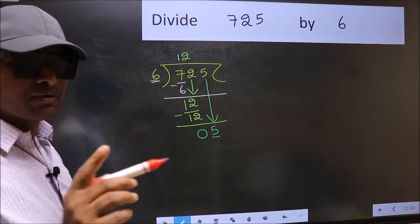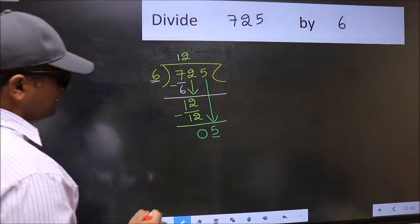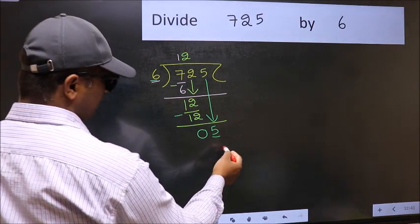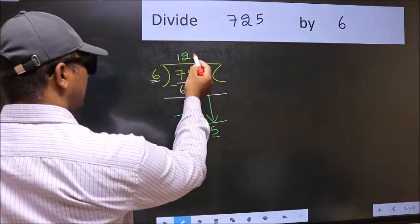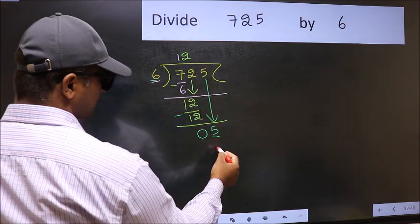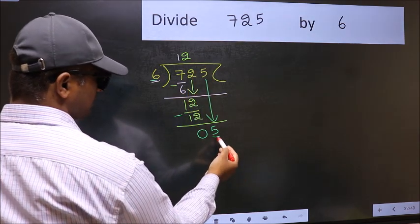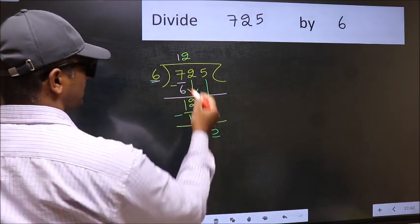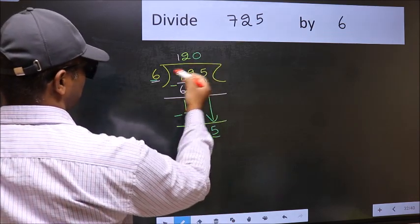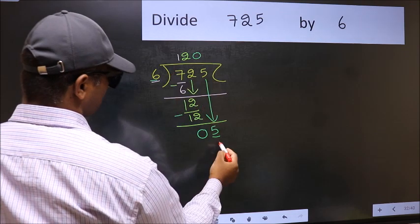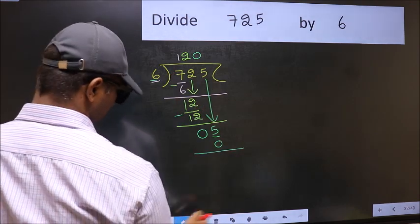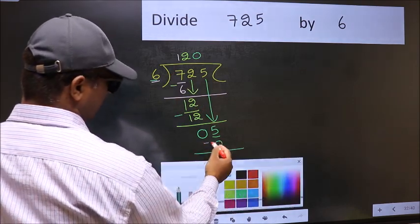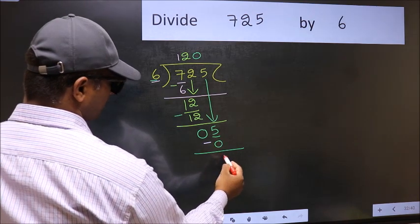Instead, what you should think of doing is, what number should we write here? If I take 1, we will get 6. But 6 is larger than 5. So what we should do is, we should take 0. So 6 into 0, 0. Now you should subtract. 5 minus 0, 5.